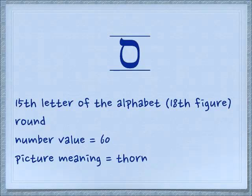The second letter we're going to learn today is the Samech, and you can see it under the number value 60. It is round, and its picture meaning is a thorn. The sound is a plain S sound.